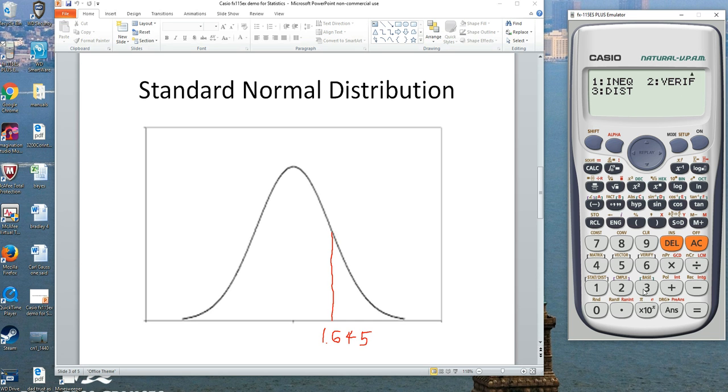But if you hit mode, down arrow key, distributions, you'd have two normals. Normal probability distribution, normal cumulative distribution. The number two is the one we want here.